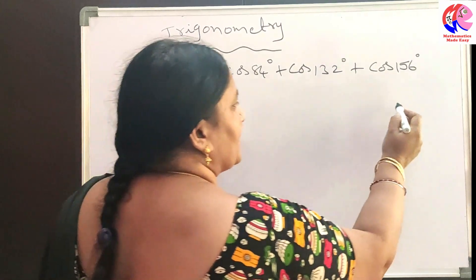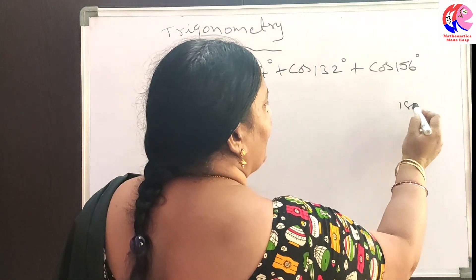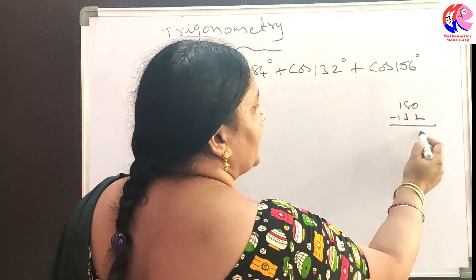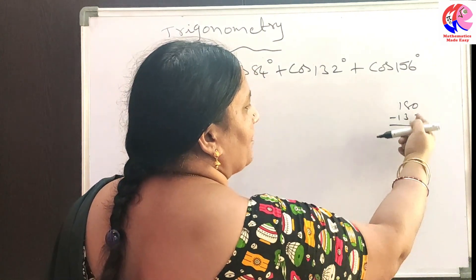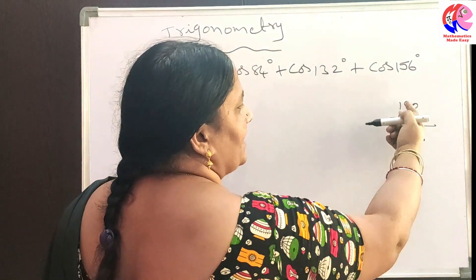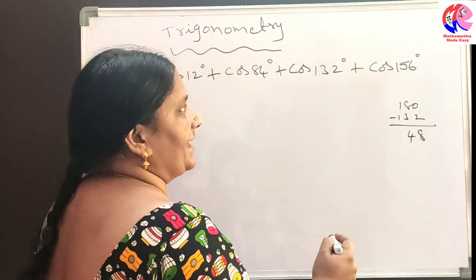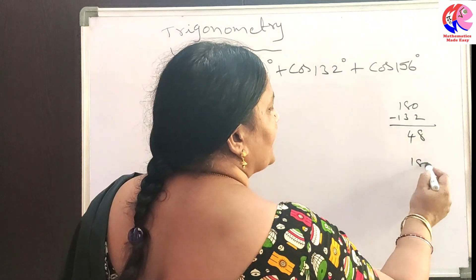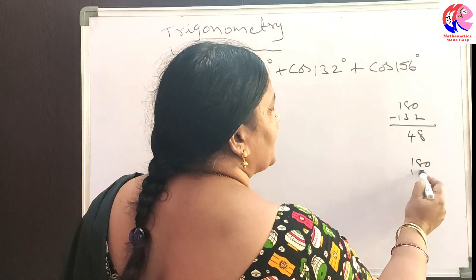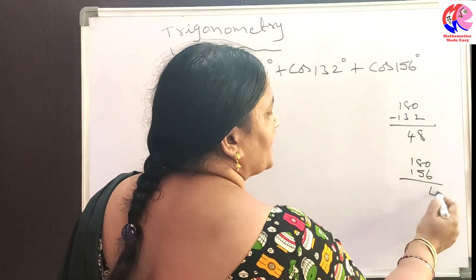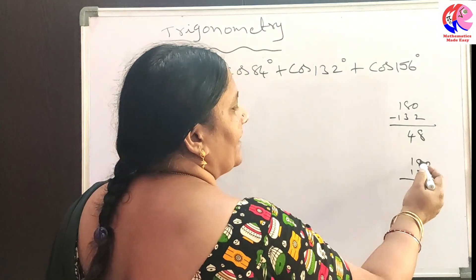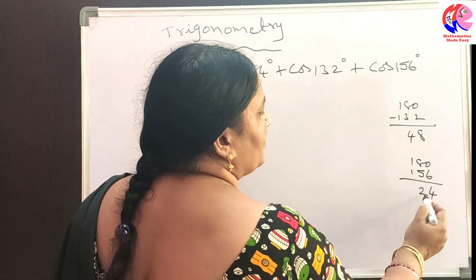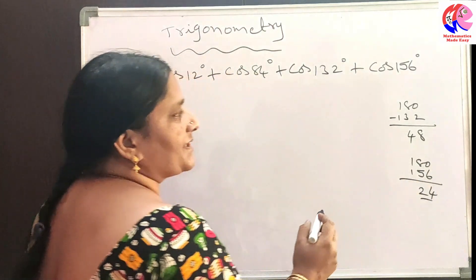Now let us take 180 minus 132, which gives 48 degrees. And 180 minus 156 gives 24 degrees.